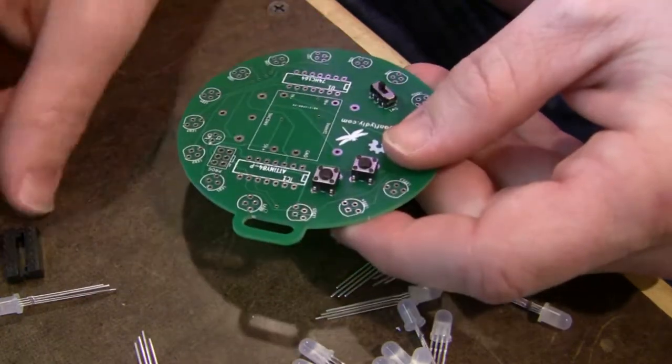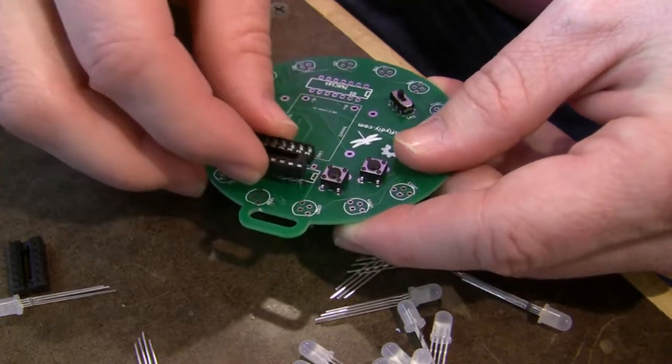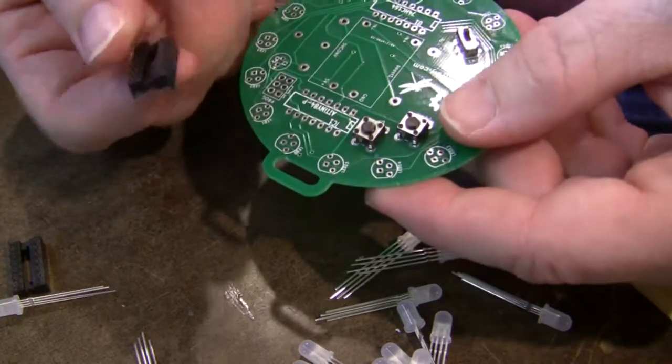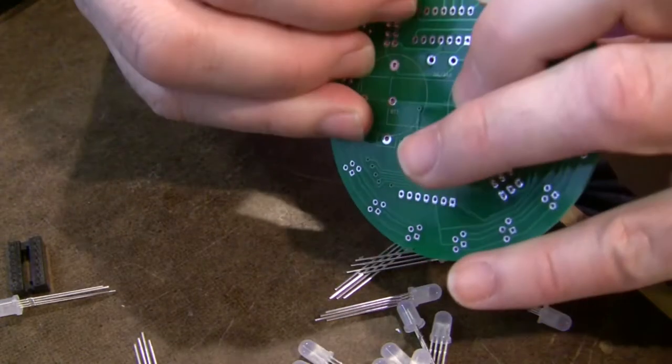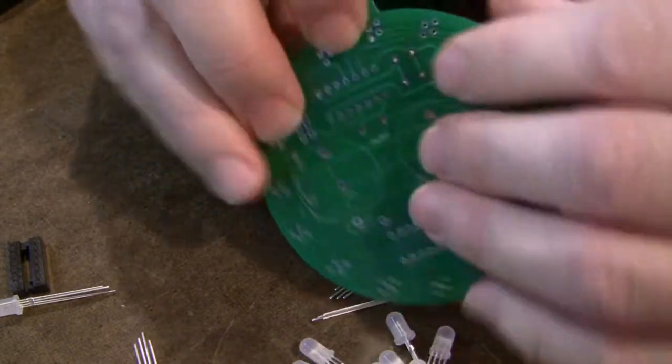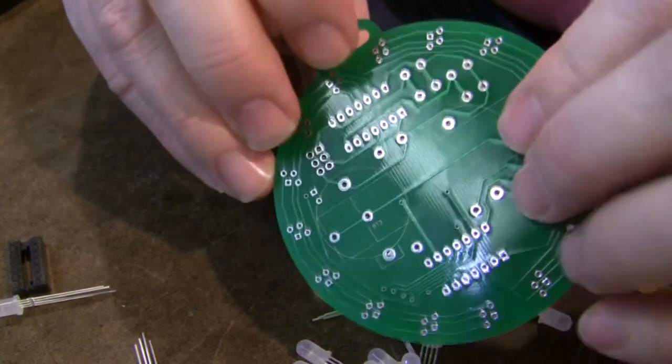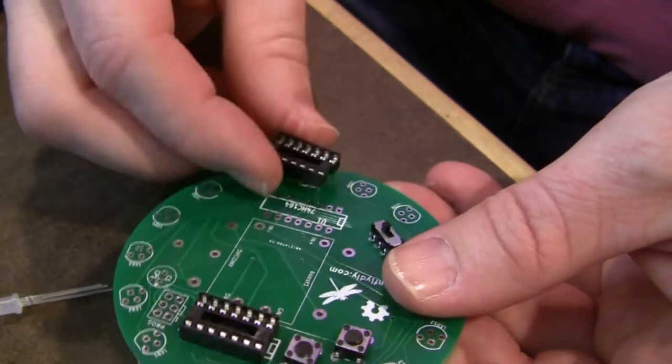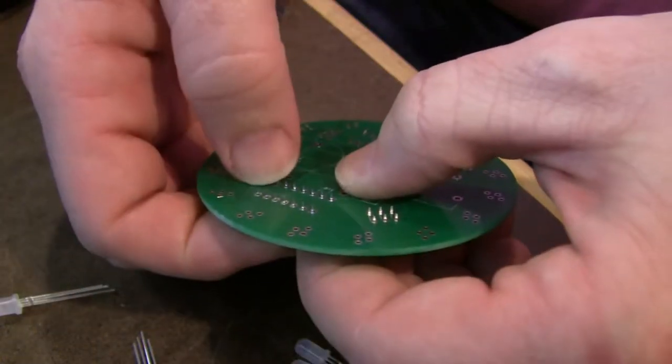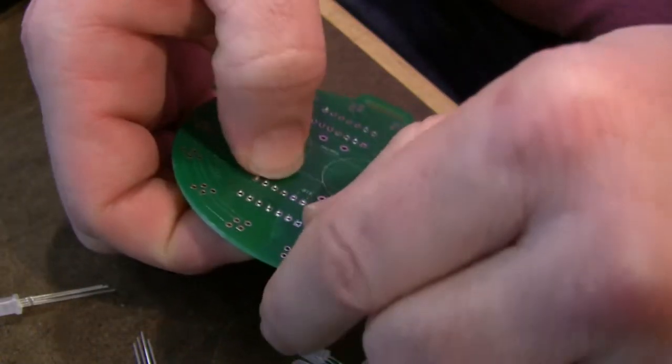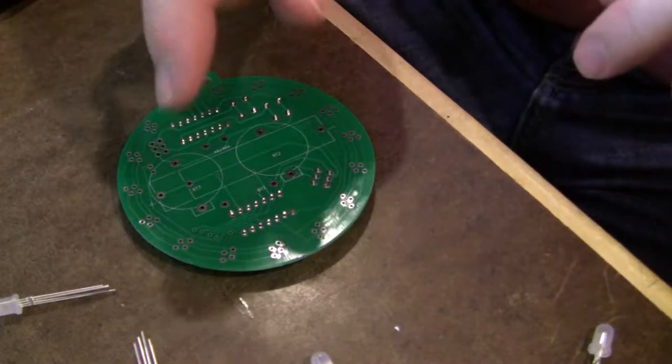Since those are all holding themselves in place, we may as well do the IC sockets as well. Check that the pins aren't bent. Now these will not hold themselves in place, so just take and bend over your fingernails the diagonal wires there. Just that one, and that one, or whichever ones you like. Doesn't matter. And then solder them in place.